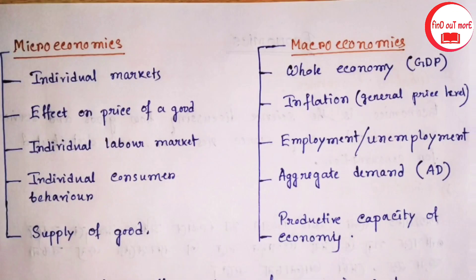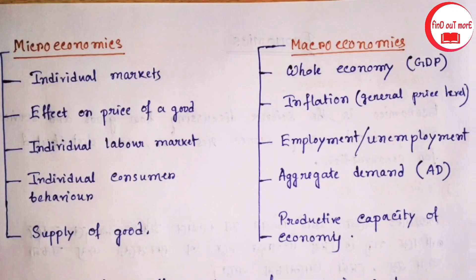Microeconomics looks at individual markets: the effect on the price of a good, the individual labor market, individual consumer behavior, and the supply of a good.